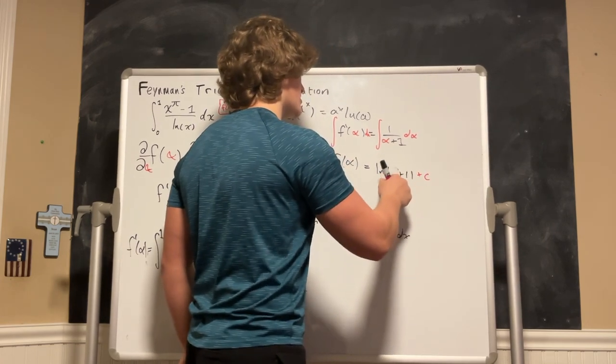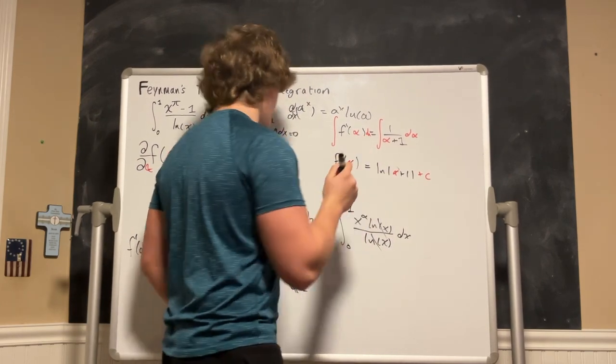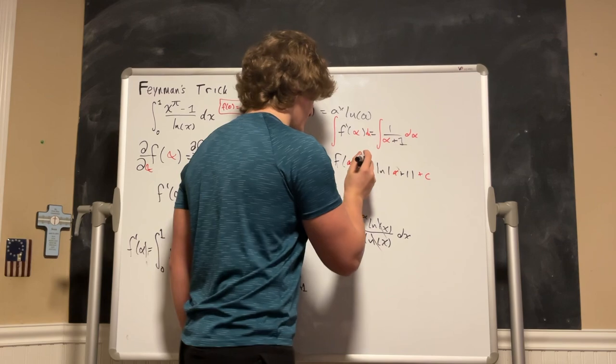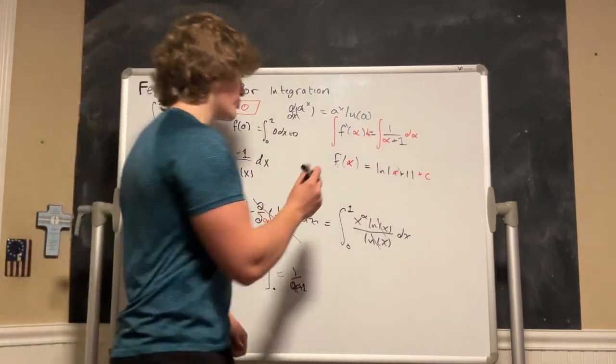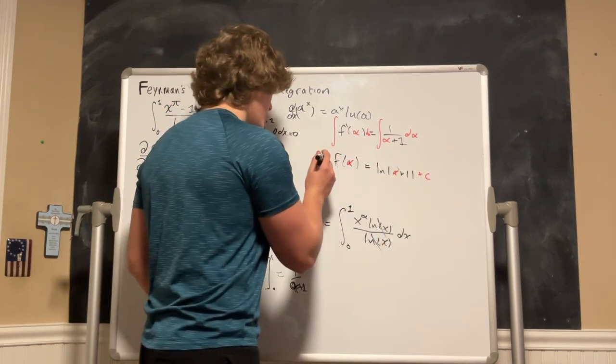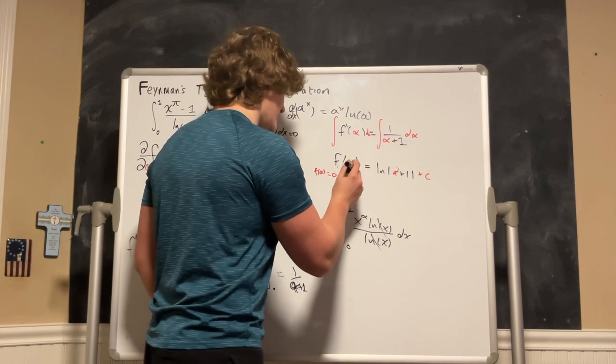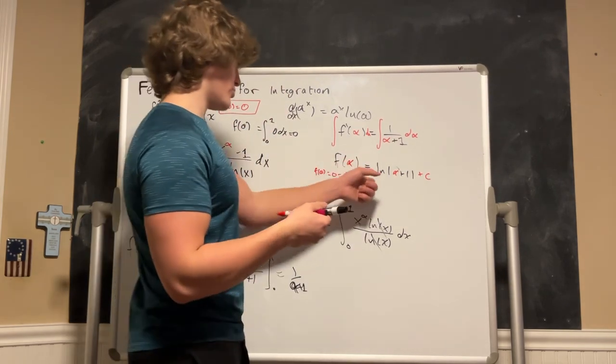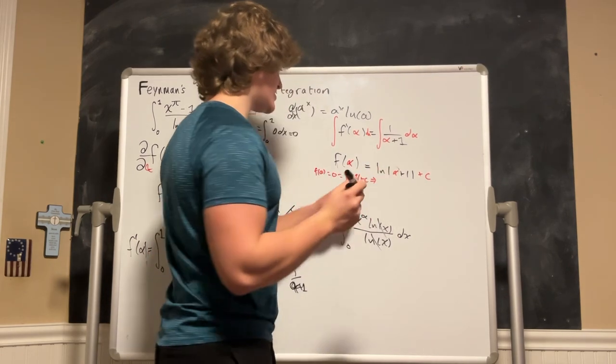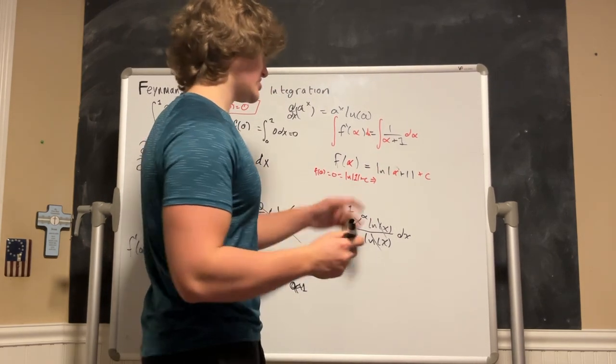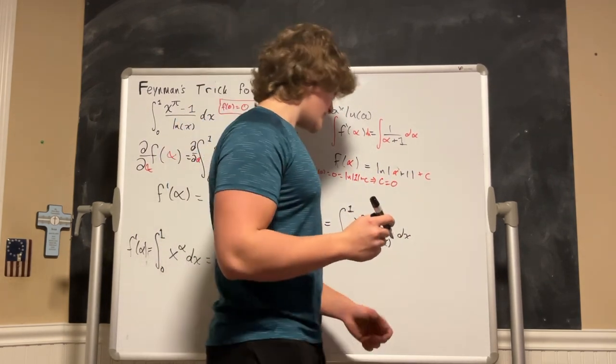And I will make this red just for continuity. And since we defined f of 0 as 0 we can now plug that in. So if we plug in 0 for alpha we get f of 0 equals 0 equals the ln of 0 plus 1, the ln of 1 plus c which means since the ln of 1 is just 0 that c is equal to 0.